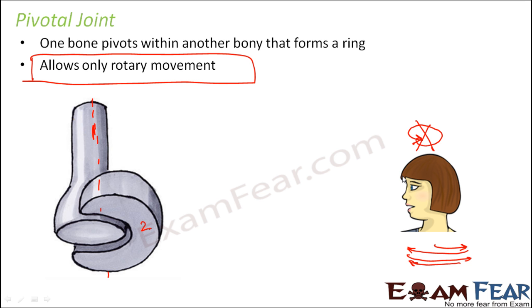Every type of joint differs in the movement it allows. We have spoken about three basic types of joint: one is the fixed joint where no movement is allowed; next is the cartilaginous joint where limited movement is allowed, like the backbone; and the third is the synovial joint where a good amount of movement is allowed. In synovial joints, some joints allow considerably more movement — like the ball and socket joint which is completely flexible — while others, like the pivotal joint, allow only rotary movement.